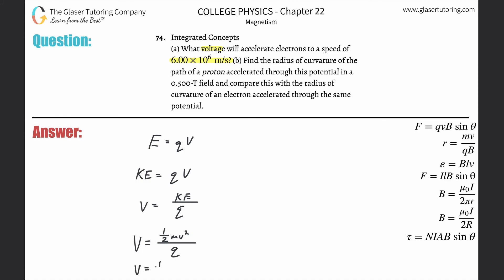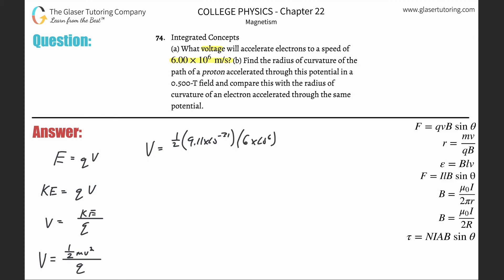Divide that by q and now we have everything we need. So this is one-half times the mass of an electron, 9.11×10^-31 kilograms - that just has to be a memorized or known fact. The velocity here is 6×10^6 meters per second.